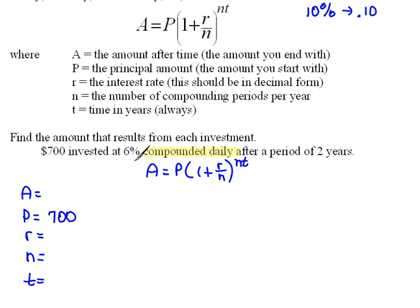At 6%, this is our interest rate. Now remember, interest rate has to be written in decimal form. So that means we have to move our decimal over two places.